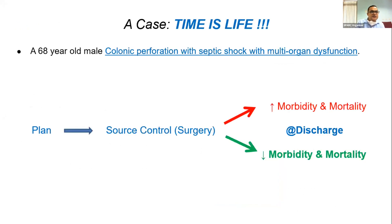The surgeon urges you to operate because source control is critical. With all reports confirming colonic perforation with septic shock and multi-organ dysfunction, the plan to proceed with surgery is clear. However, many times in real scenarios both outcomes are possible — the patient may not survive. The goal is to decrease morbidity and mortality. The key question is: how to best achieve this?